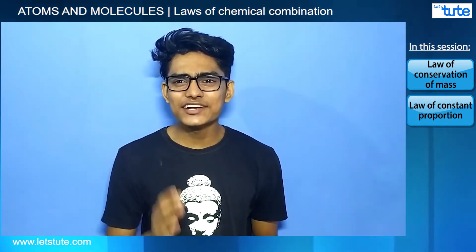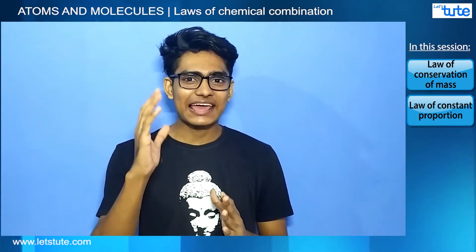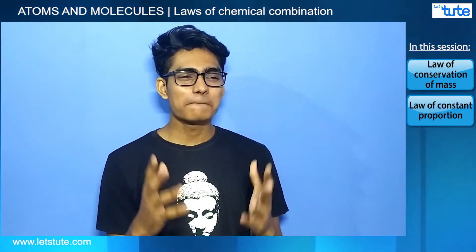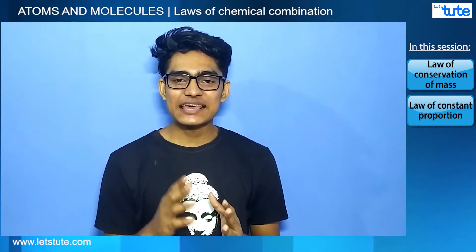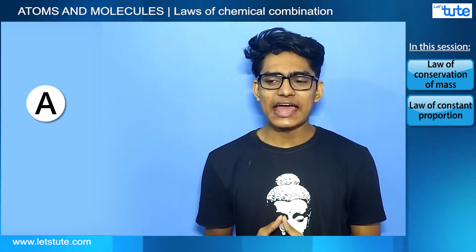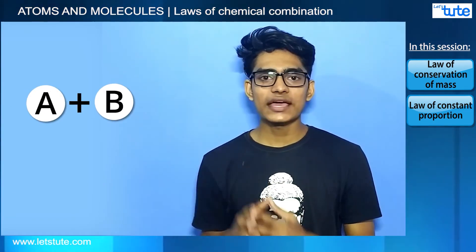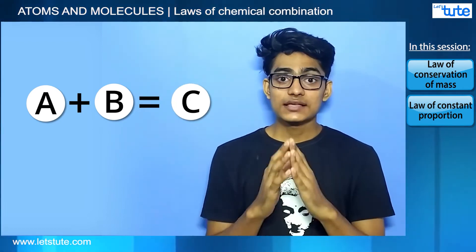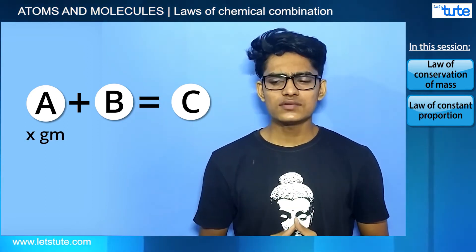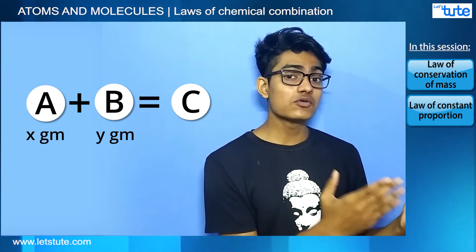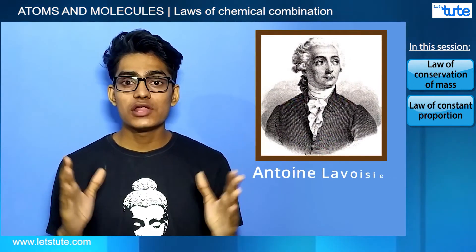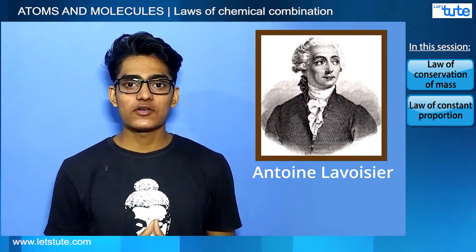Wait a minute. I just added two different things to make something new — like I added one cup of milk and five crushed Oreo biscuits to make Oreo milkshake. Same happens in atoms of different elements. If I take element A and element B and add them together, I get compound C. Suppose element A weighs x grams and element B weighs y grams, so compound C will weigh x plus y grams. In the 18th century, Antoine Lavoisier proved some amazing facts about atoms.